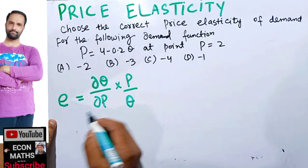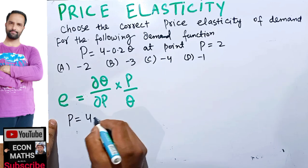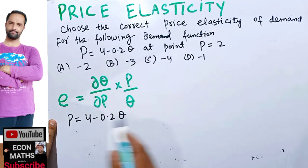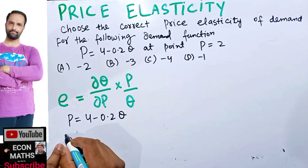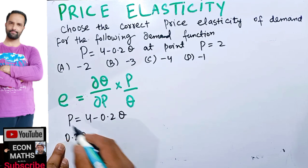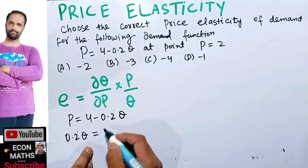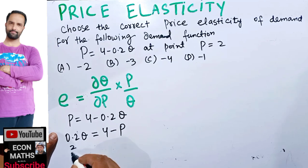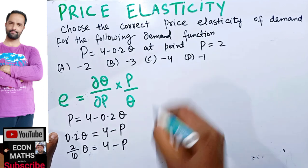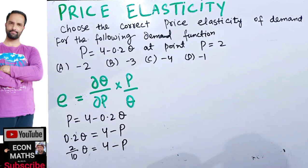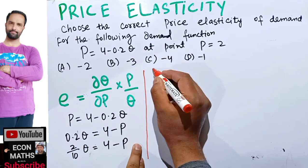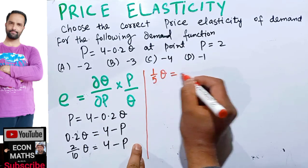We have the demand function p equals 4 minus 0.2q. First, we need to solve this for q. Transposing, 0.2q equals 4 minus p. This can be written as 2 upon 10 times q equals 4 minus p, which simplifies to 1 upon 5 times q equals 4 minus p.